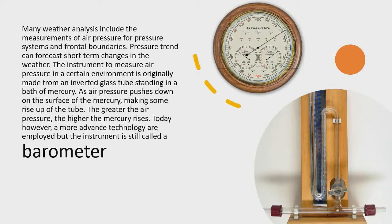As air pressure pushes down on the surface of the mercury, making some rise up the tube, the greater the air pressure, the higher the mercury rises.